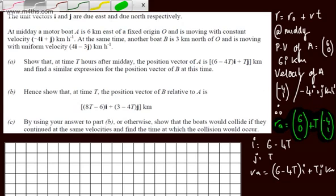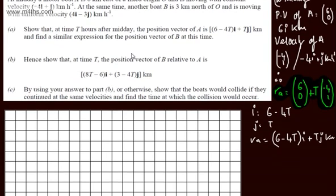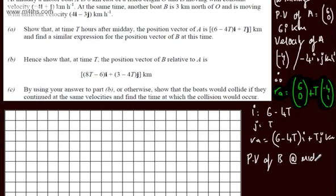So let's now consider boat B. We're told that B is starting at 3 km north of O, a fixed origin. So this is going to have position vector (0, 3), or 3j km.